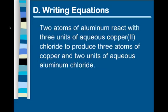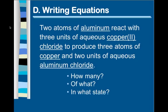Alright, so writing equations. We're going to go from word form to equation form. Now remember, we have a few questions to ask ourselves. But, when we first see an equation like this, we need to pull out the important information. Aluminum is important. Copper two chloride is important. Copper is important. And, aqueous aluminum chloride is important. That tells us what chemicals we're dealing with. So, remember, we have a few questions we need to ask ourselves. How many, of what, and what state?